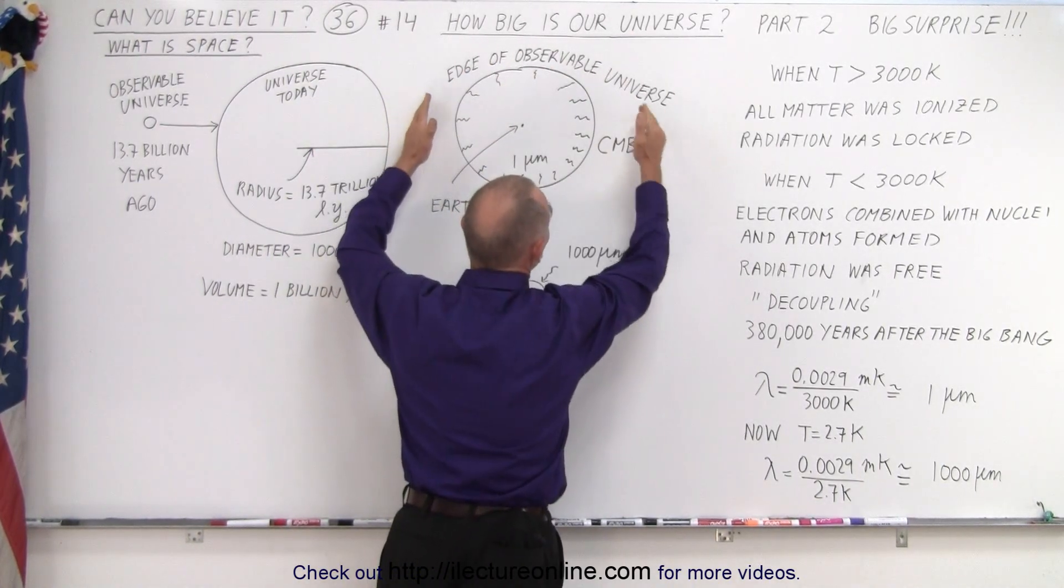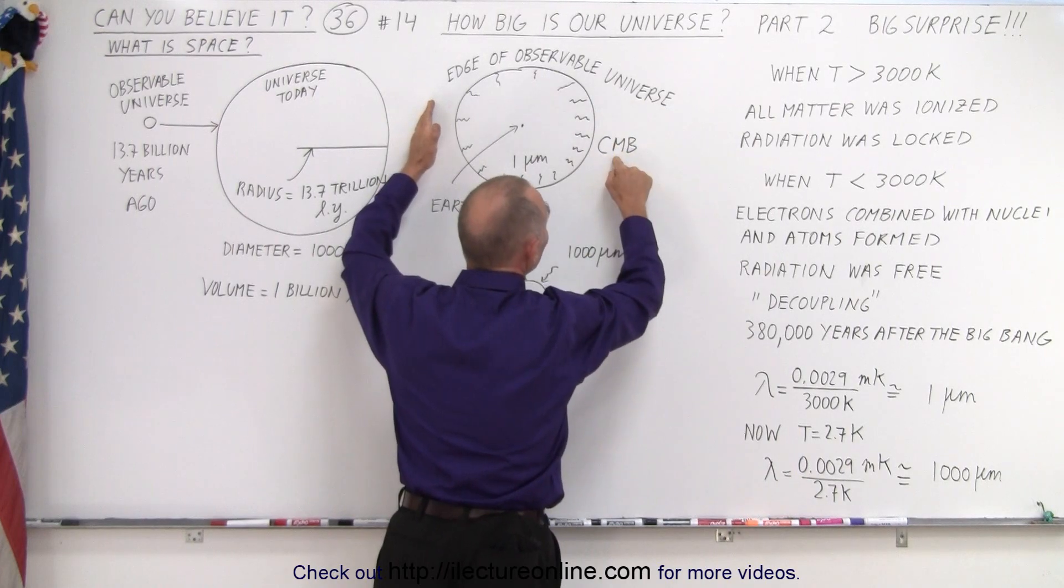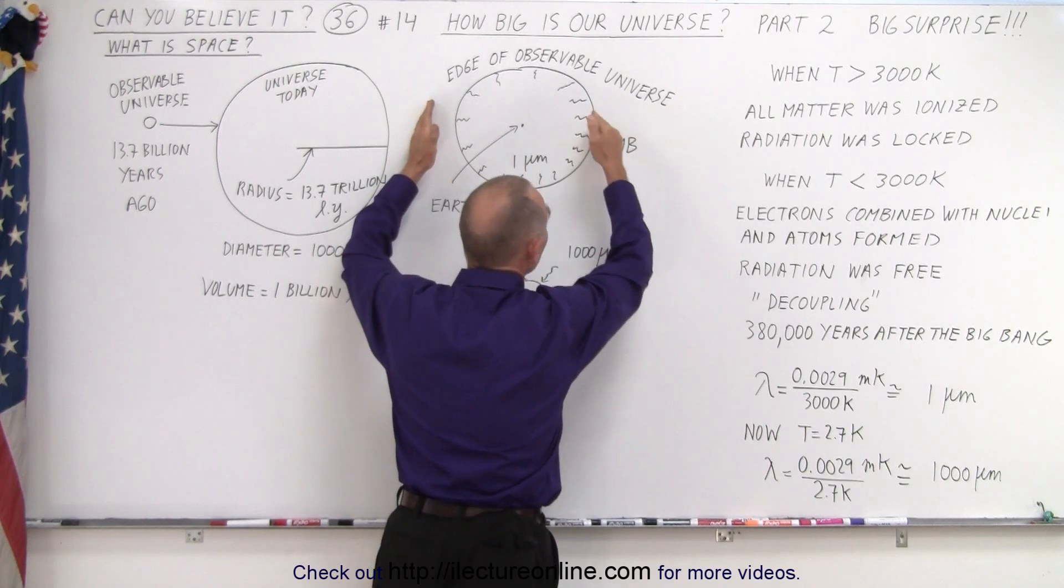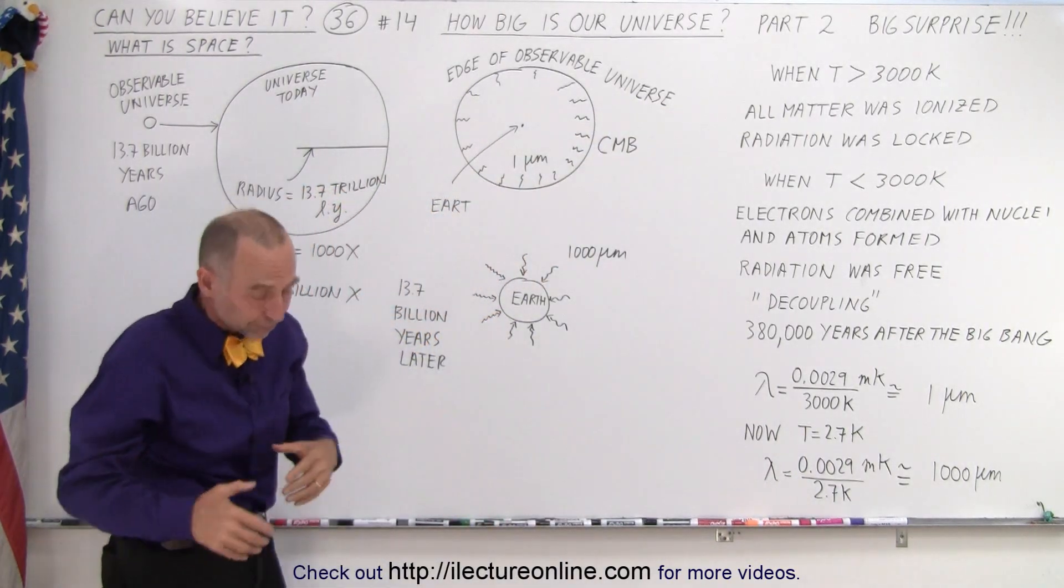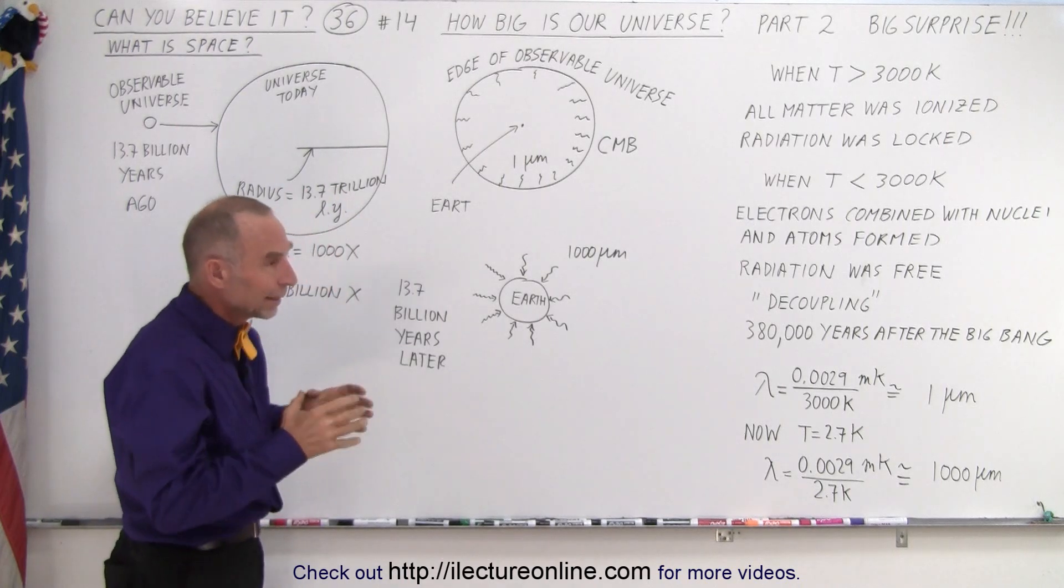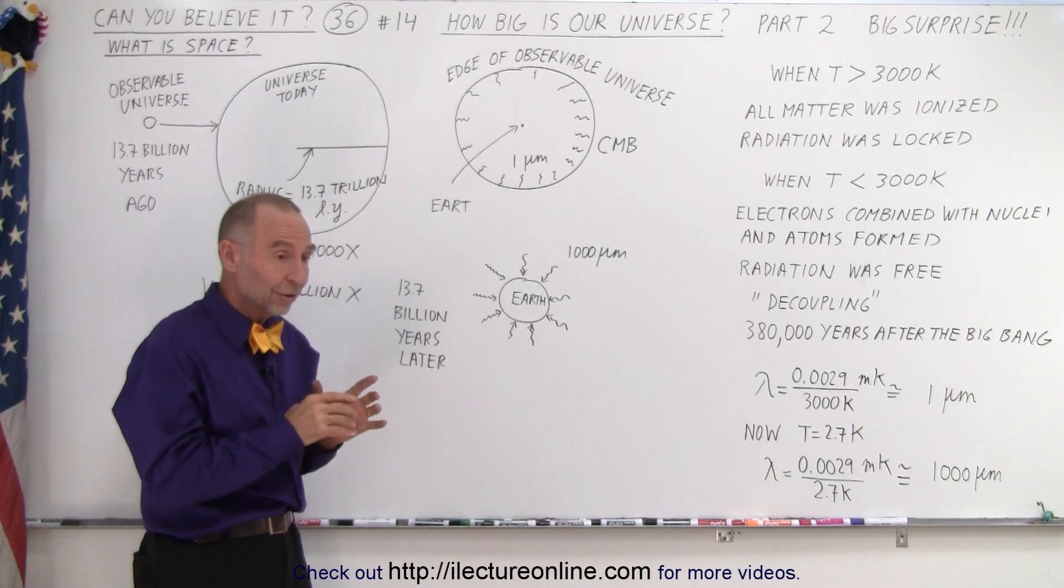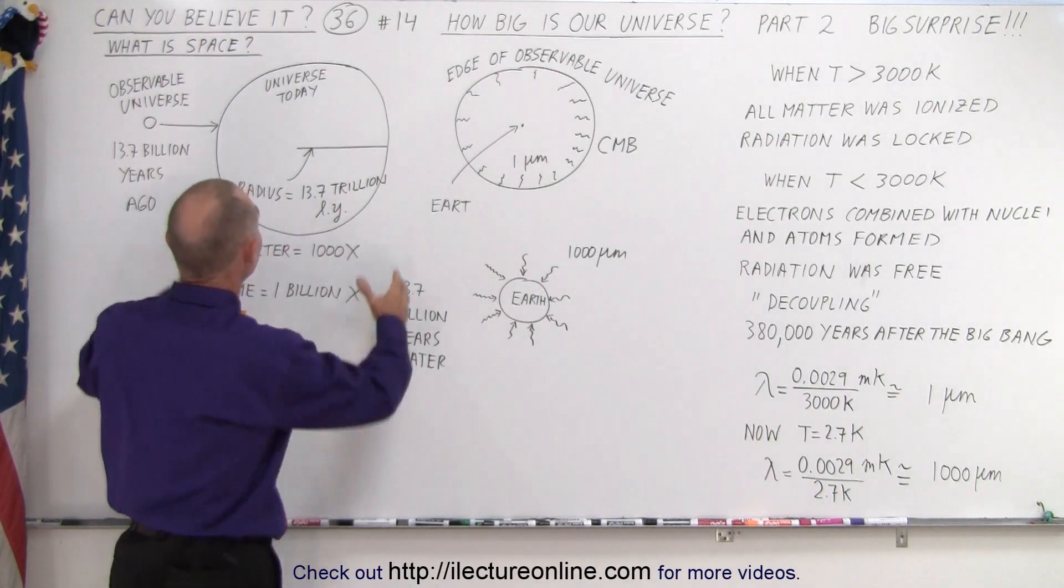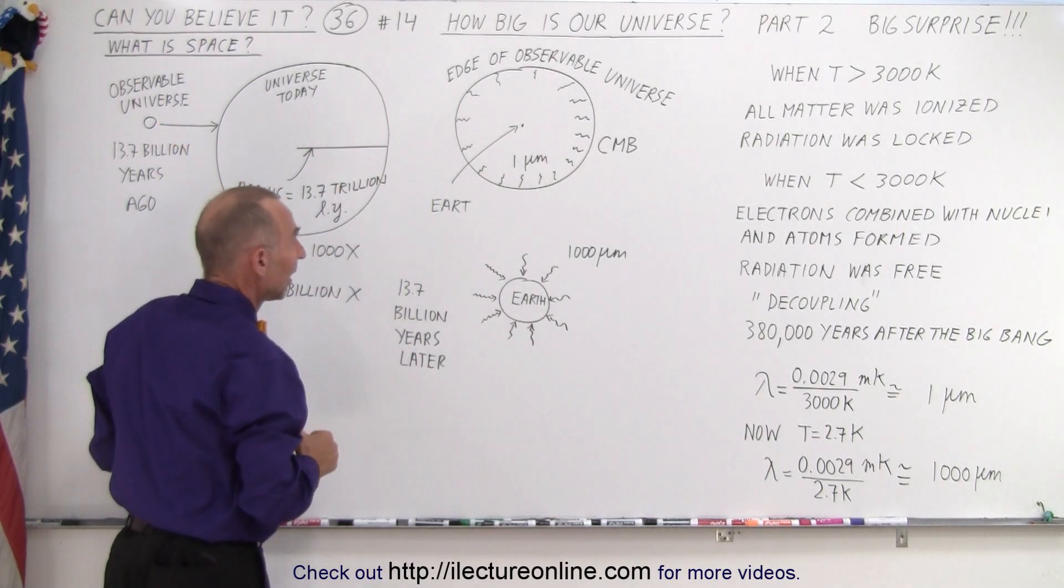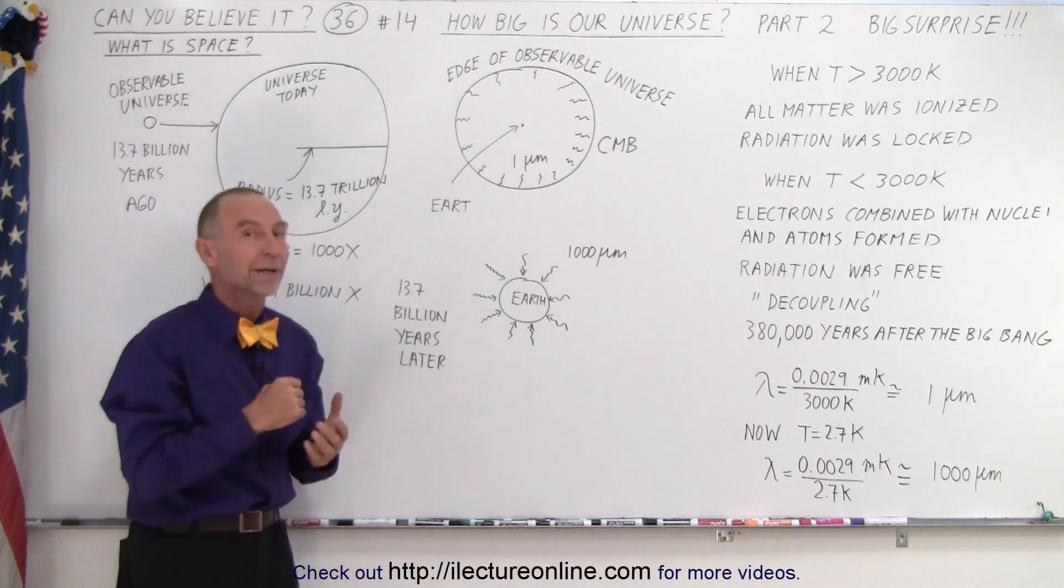And the universe, of course, could have been a lot bigger, because any radiation of the CMB that was farther away than 13.7 billion light years, that could not have reached us yet. So because of that, the universe must be at least this big in size, and very likely bigger than that.